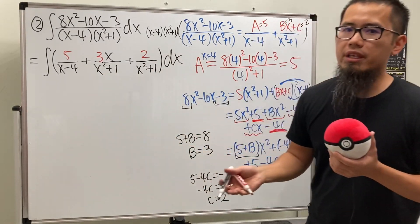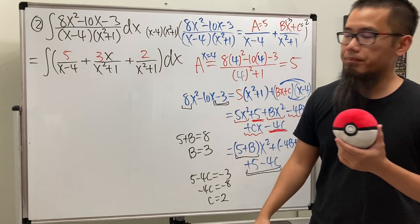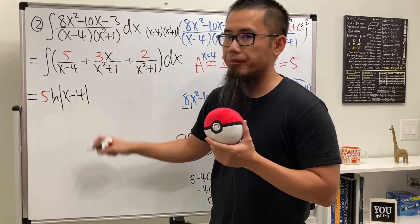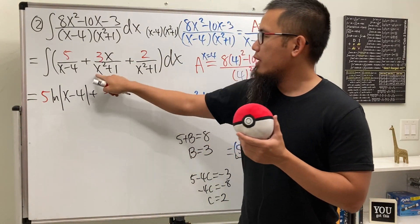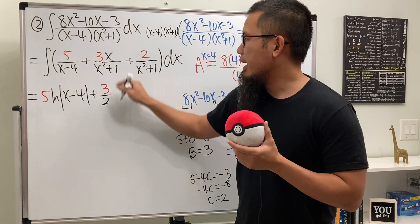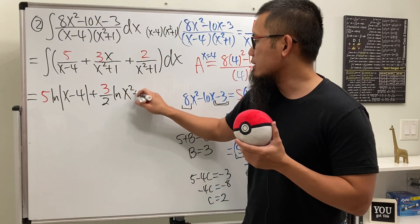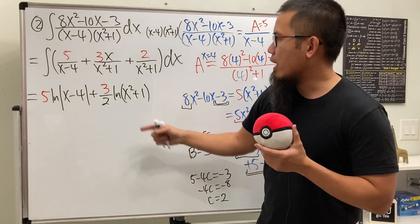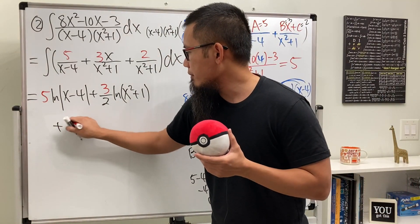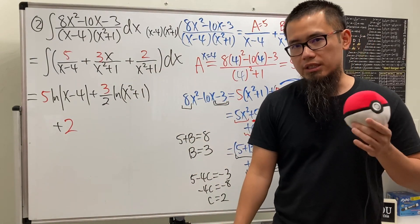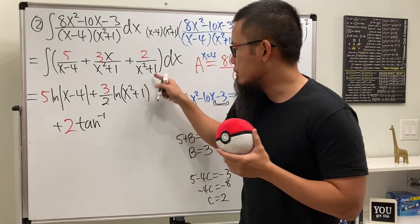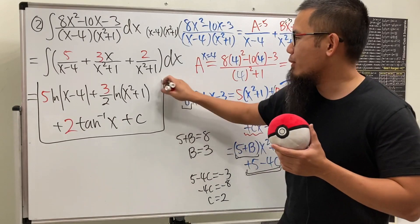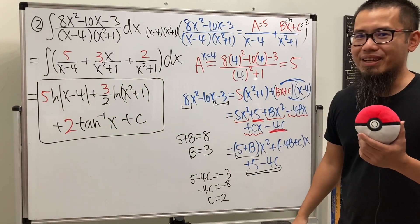Integrating: 5 over (x minus 4) gives 5 ln|x minus 4|. For 3x over (x squared plus 1), using substitution we get 3/2 ln(x squared plus 1). For 2 over (x squared plus 1), since a equals 1, the inverse tangent formula gives 2 arctan(x). The full answer is 5 ln|x minus 4| plus 3/2 ln(x squared plus 1) plus 2 arctan(x) plus C.